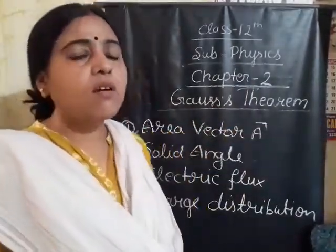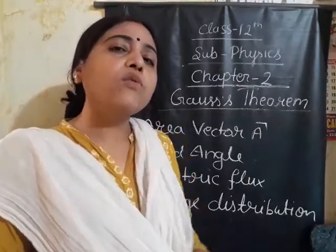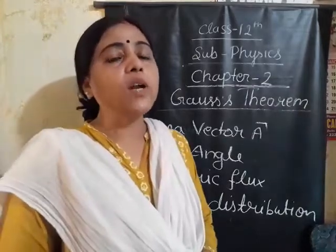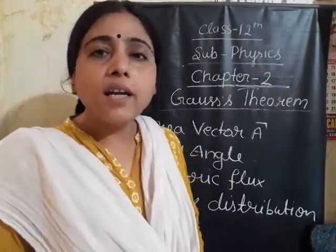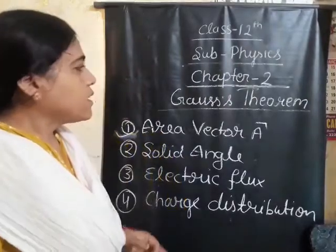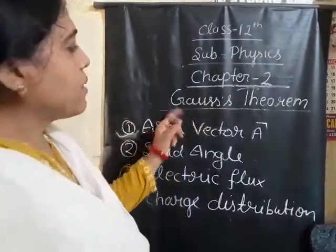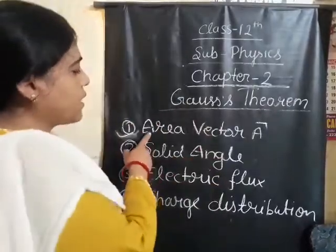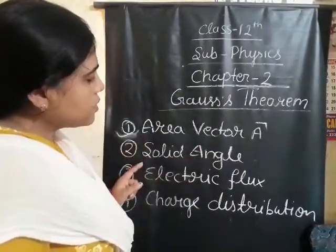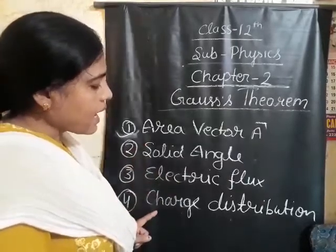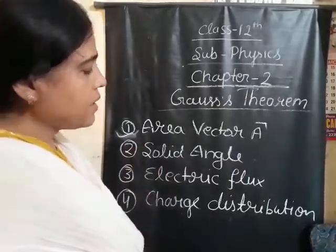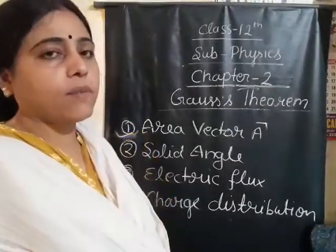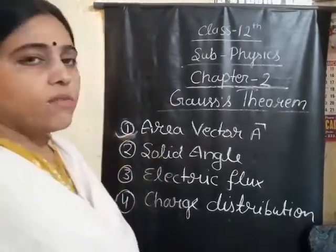Coulomb's law and Gauss's law are both equivalent, but Gauss's law is more fundamental in physics, because Coulomb's law does not hold exactly in electrodynamics. Before starting Gauss's theorem, we have to understand some important topics: area vector, solid angle, electric flux, and charge distribution. With the help of these topics, we can easily understand Gauss's theorem.